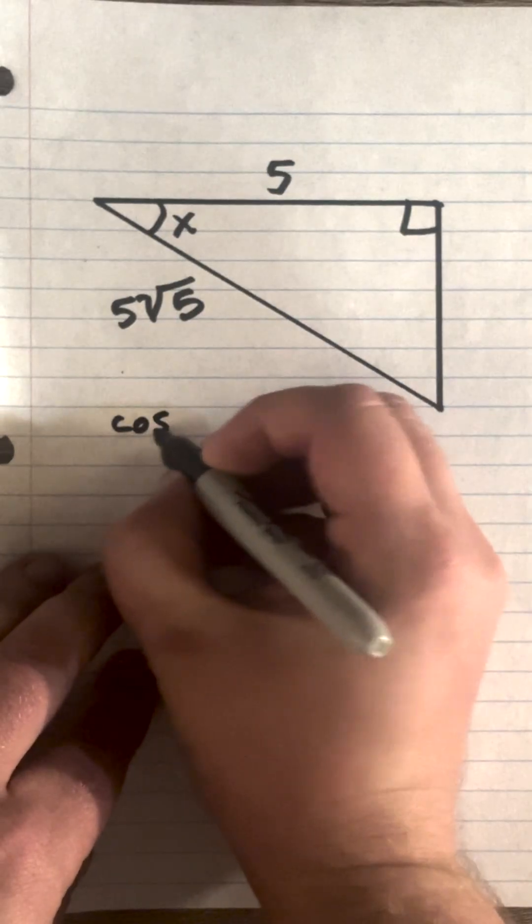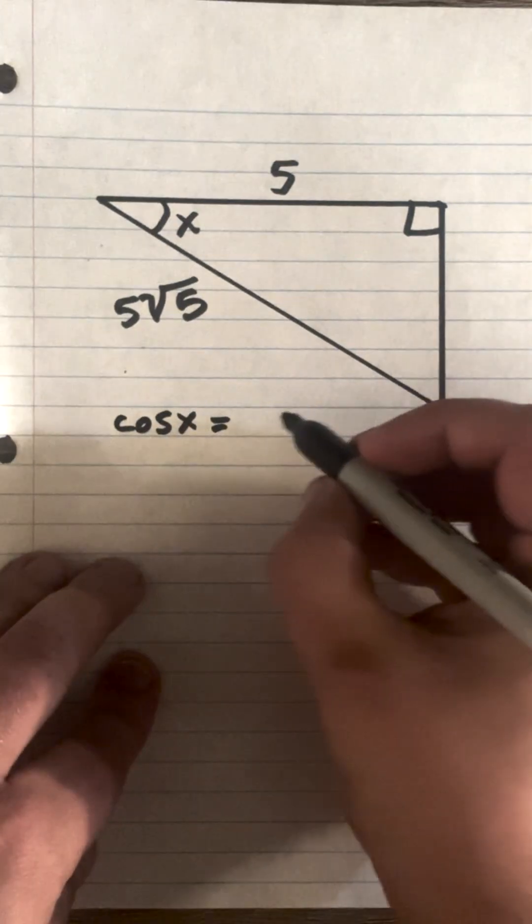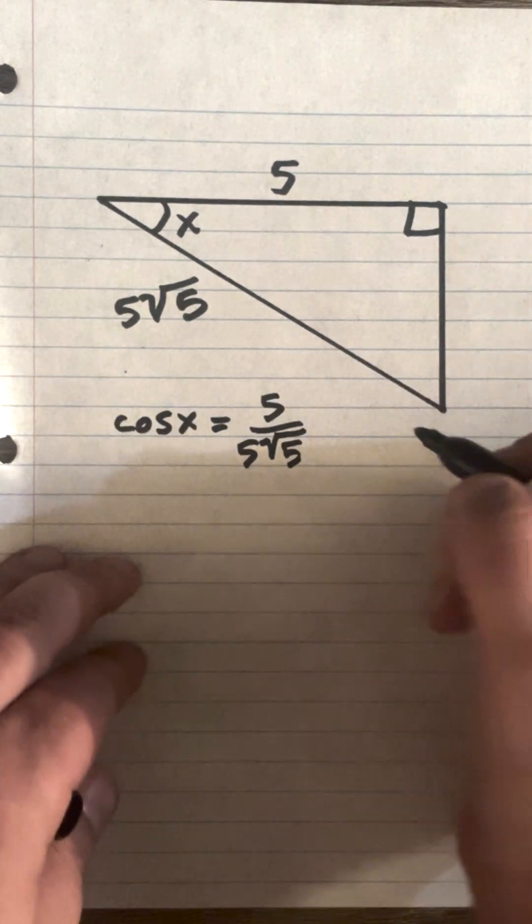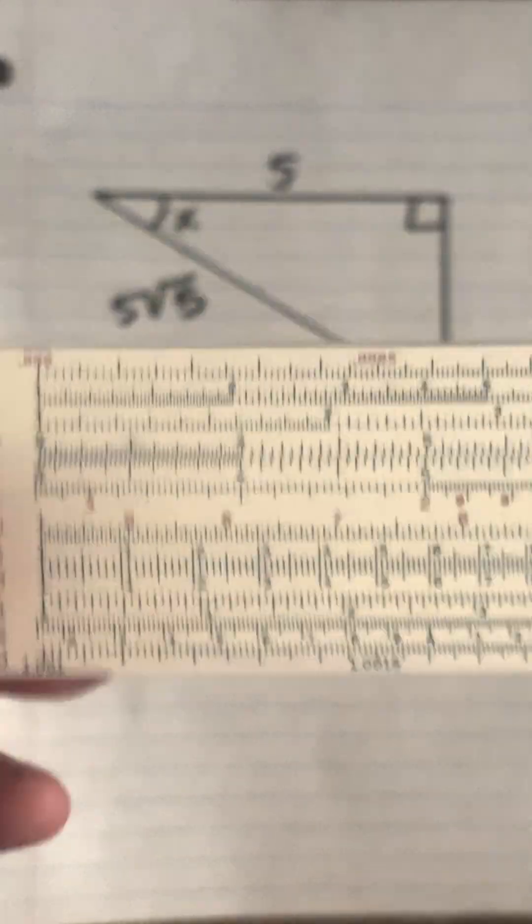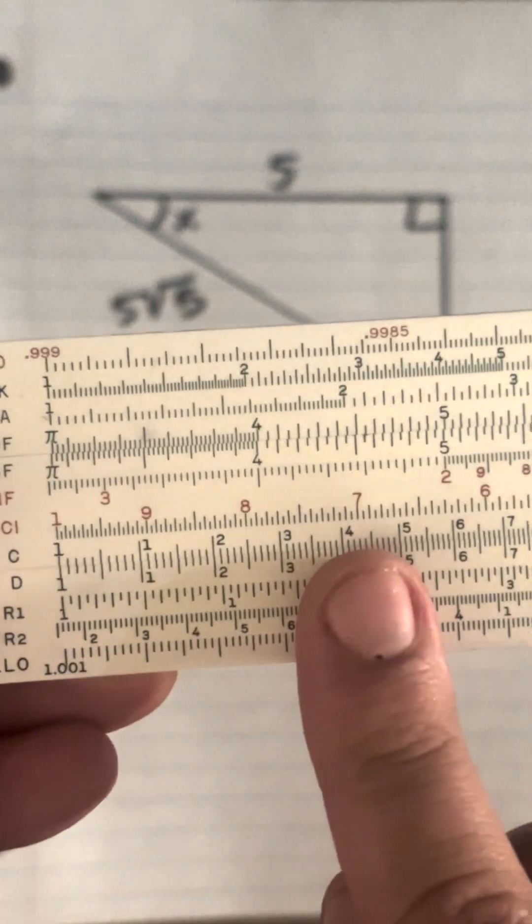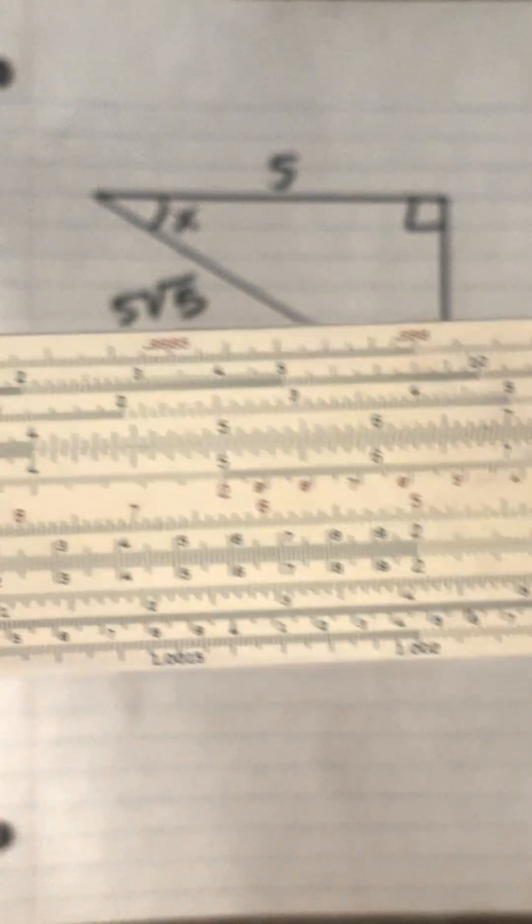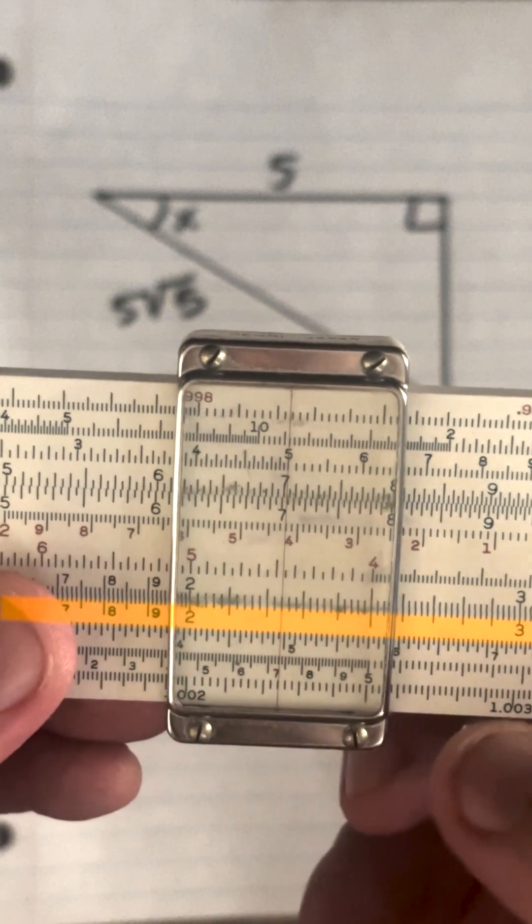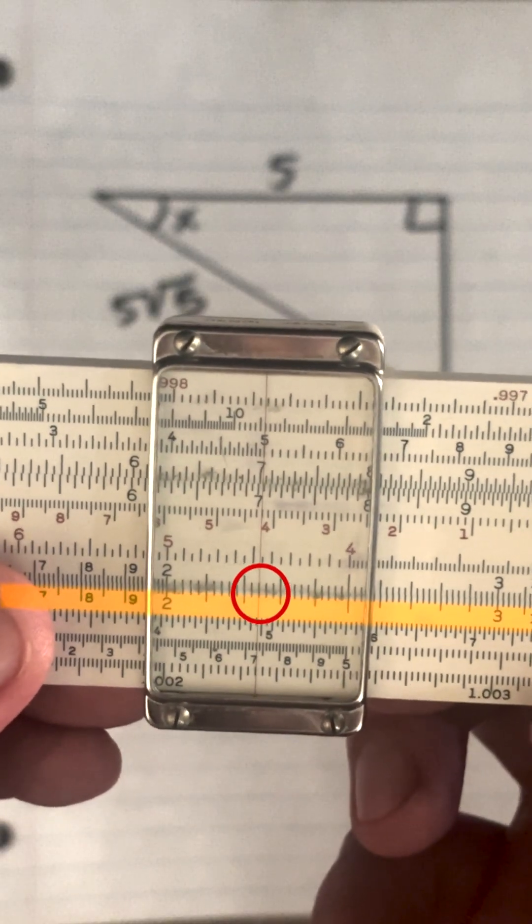So we want cosine x equals adjacent 5 over hypotenuse 5 times the square root of 5. So I'll bring out the slide rule, and we want to get a square root, but I don't want to go to the root scales because I want it to end up on the c and d scales. So I'll go to the a scale, and I'll go up to 5 on the a, and if I look down, the square root on d is 22.4.